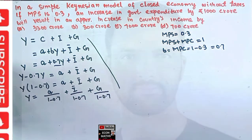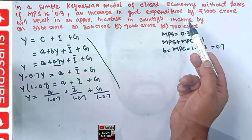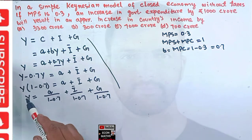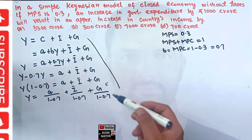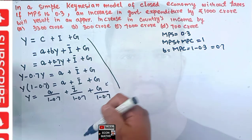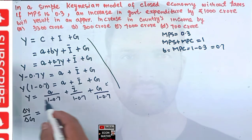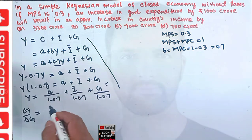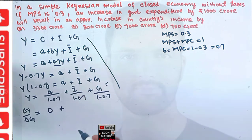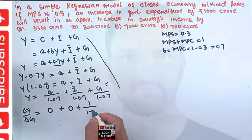To see the impact of a change in government expenditure on total income, we differentiate partially with respect to G. Since no G is involved in the first two terms, their derivatives are 0. The derivative of G is 1, so delta Y / delta G = 1 divided by (1 minus 0.7).